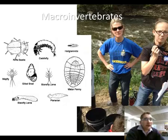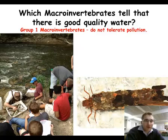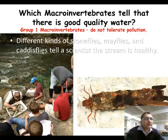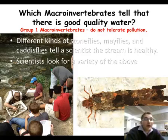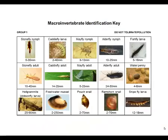Here is a picture of some different types of macroinvertebrates we may find. Group 1 macroinvertebrates are the macroinvertebrates that do not tolerate pollution. They include different types of stoneflies, mayflies, and caddisflies, and they will help us know that the stream is healthy. So while we are going through and finding populations of these organisms, we are going to be looking for mayflies, stoneflies, and caddisflies in order to tell if the stream is a healthy environment for our salmon to survive.